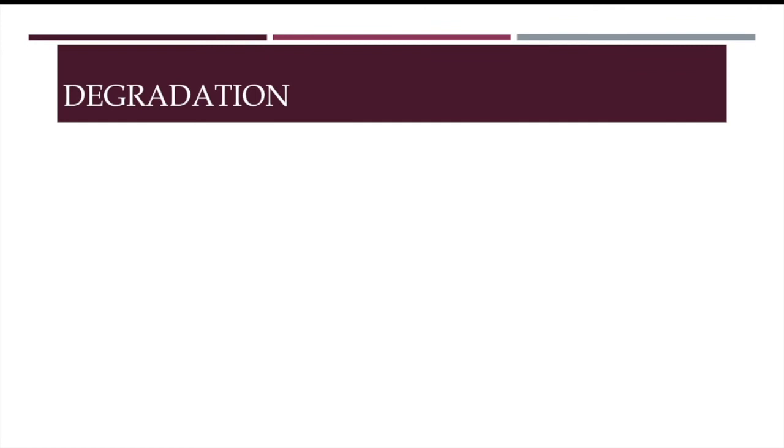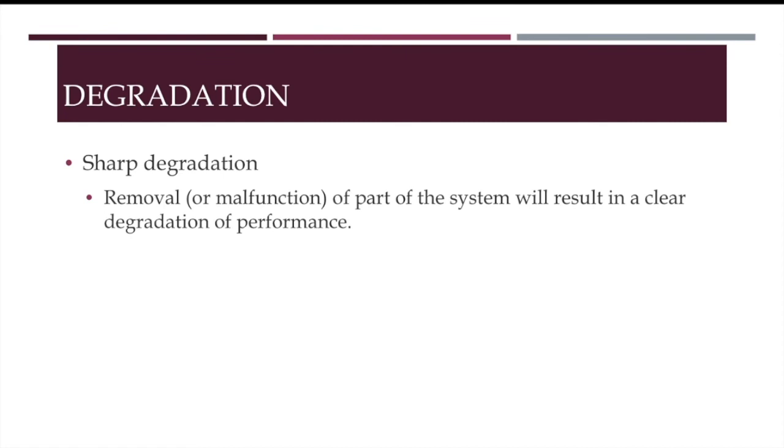Okay, let's change gears. One of the main complaints against classical computational models is that they are brittle. This is evidence in what is called sharp degradation, which is basically that the removal or malfunction of part of the system will result in a clear crash, a degradation of performance. So, for instance, if you remove a symbol token, or this starts to malfunction, there will be a loss of the information that was stored in that token. And all or nothing matters. And likewise, if you lose an operating procedure, the process that was affected by that procedure will no longer be usable. And so, all in all, there is a fall in performance that is sudden and clearly defined.